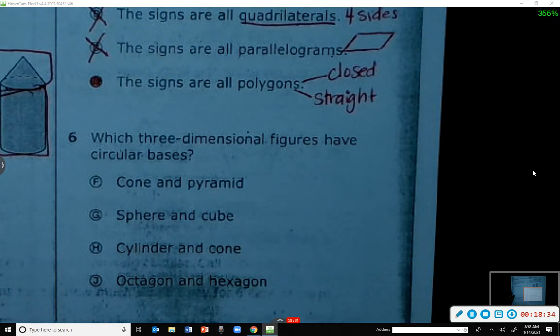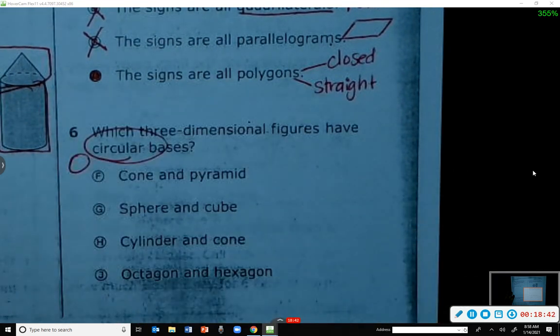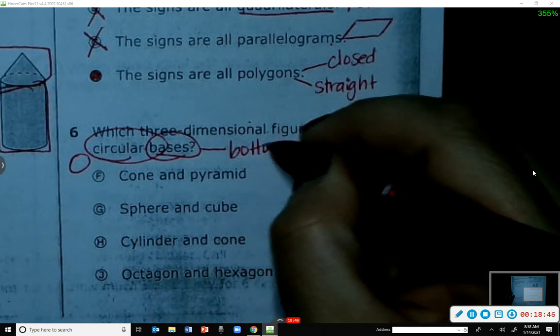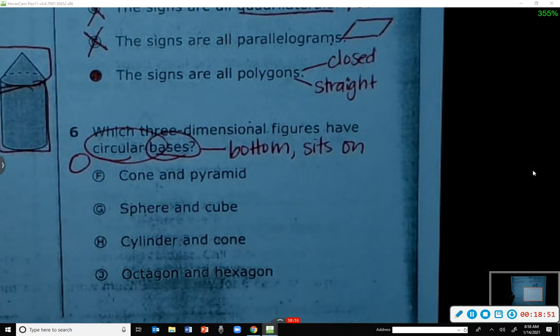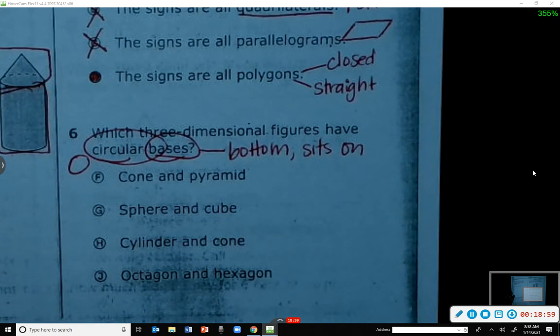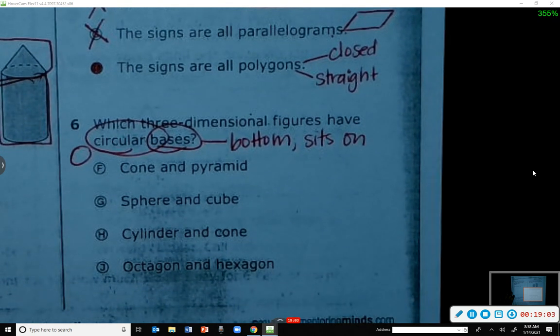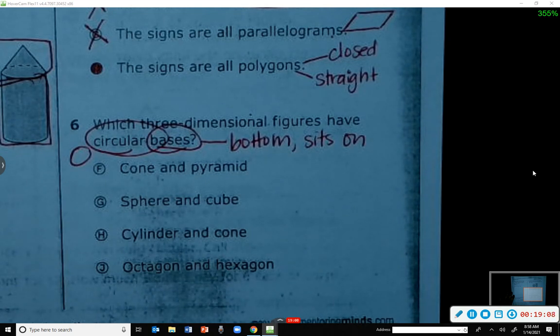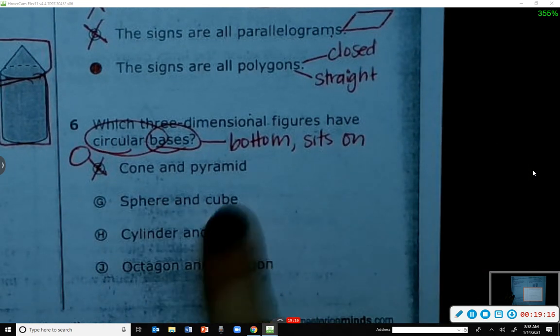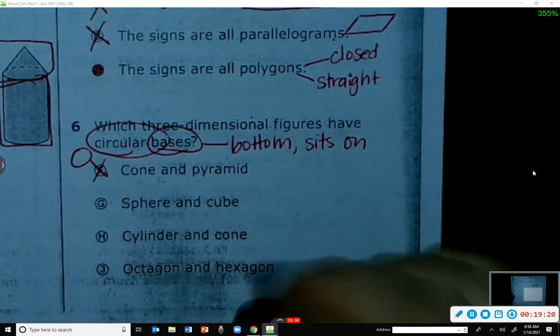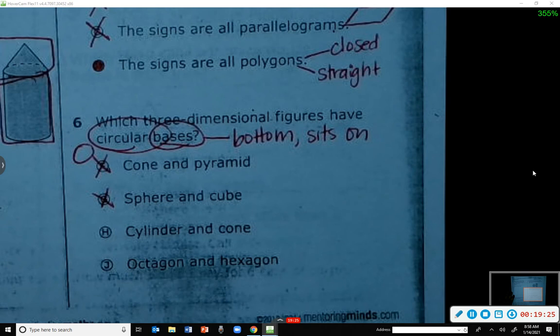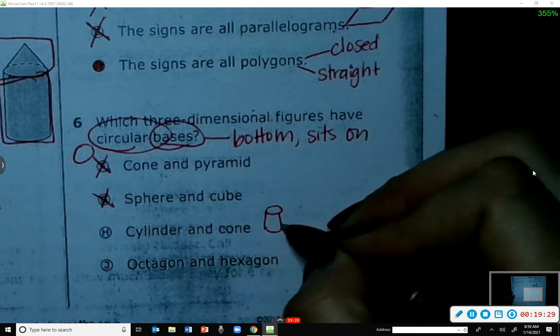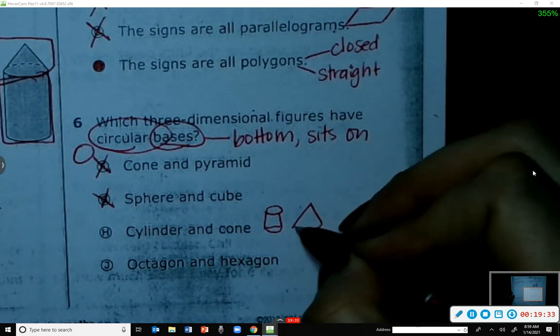Number six: Which three-dimensional figures have circular bases? What does circular mean? It means round, like a circle. And base means the bottom, what it sits on. Which three-dimensional figures have circular bases? Cone and a pyramid? Does the cone, though? Yes, a cone does. A pyramid doesn't. Sphere and cube? No, a sphere doesn't have a base, a cube has squares. Cylinder and cone? Yes. Yes, so the cylinder looks like the can, it's got circles, and then the cone also has a circle.